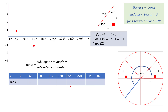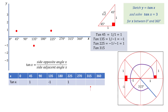Rotating the wheel further through 180 plus 45 to give 225 degrees, a right angled isosceles triangle is formed in the third quadrant, so tan 225 degrees equals negative 1 divided by negative 1, giving positive 1, which is plotted. Rotating the wheel further to obtain 315 degrees forms a right angled isosceles triangle in the fourth quadrant, showing tan 315 equals negative 1 divided by 1, which is negative 1, and this is plotted on the graph.